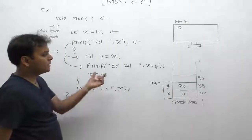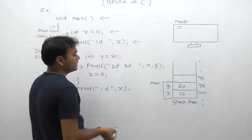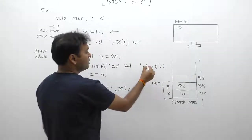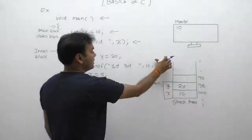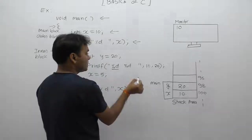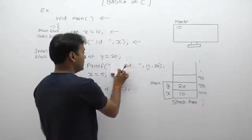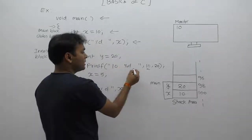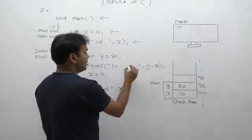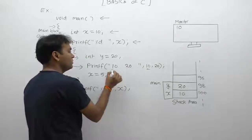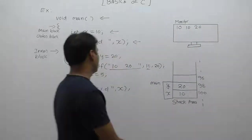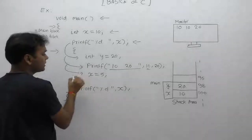The next statement displays the value of x and value of y. The current value of x is 10, so x is replaced by 10. The value of y is 20, so y is replaced by 20. The first format specifier is replaced by 10 and the next format specifier is replaced by 20, meaning the print statement will display 10 space 20.